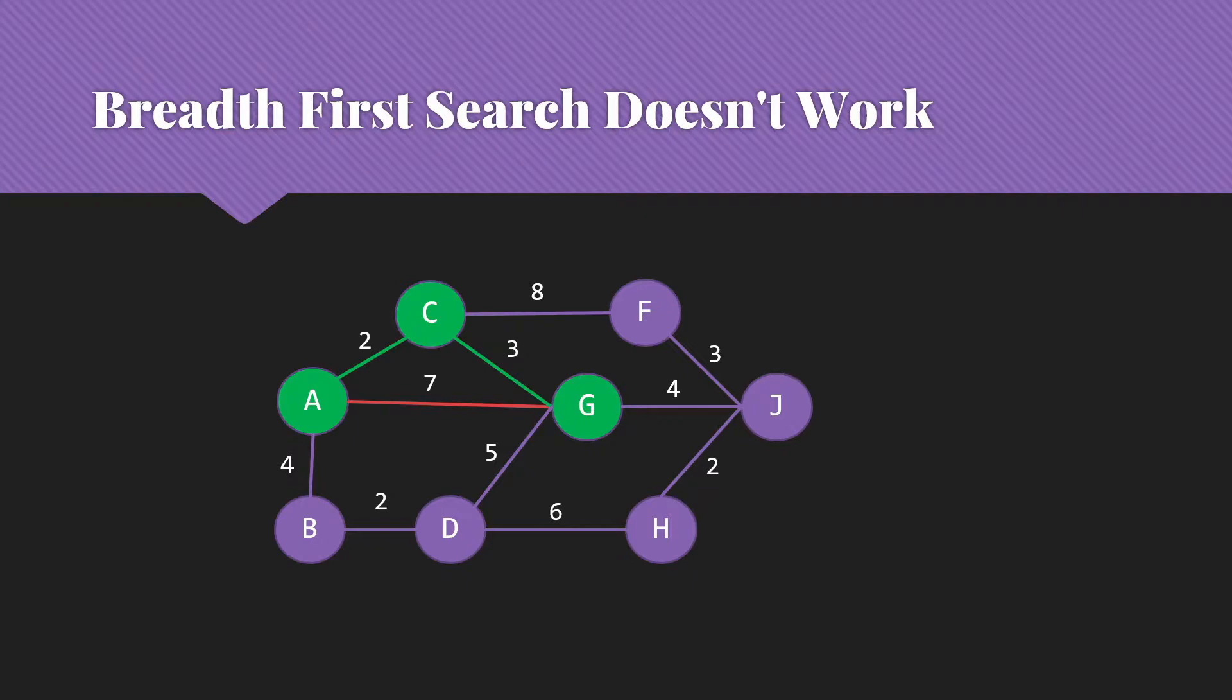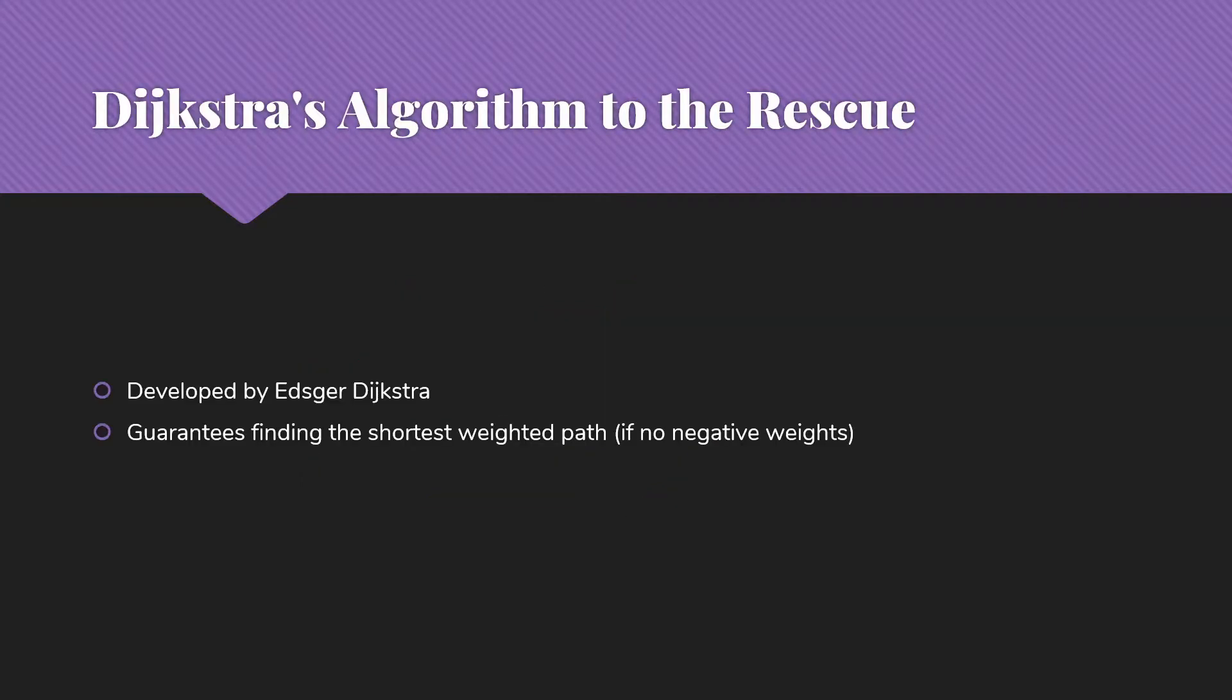It may only require one edge to get from A to G directly, but the cost is 7, while the two edges to get from A to C to G cost 5. Our solution to this is to use Dijkstra's algorithm.